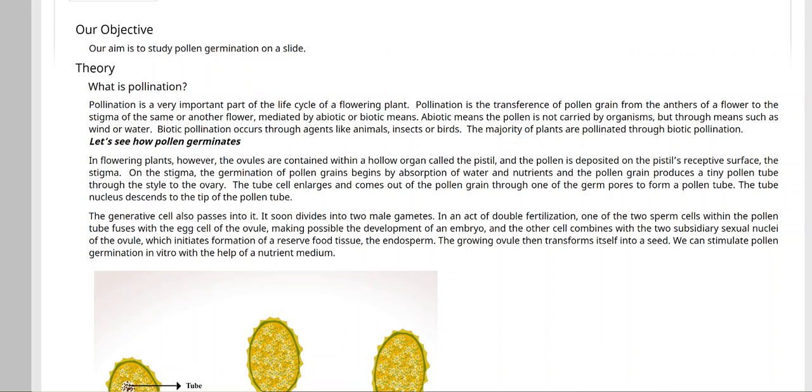Then there will be pollen germination. The pollination process is done and pollen grains are on the stigma. Now what will happen? The germination of pollen grains begins by absorption of water and nutrients, and the pollen grains produce tiny pollen tubes through the style to the ovary. Pollen grains have two membranes: exine and intine. The intine forms pollen tubes and the exine will be removed at germ pole.